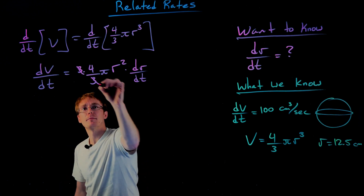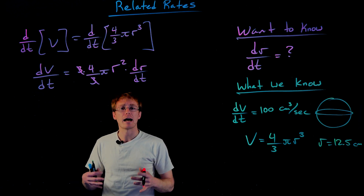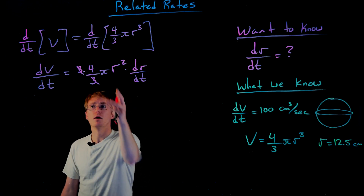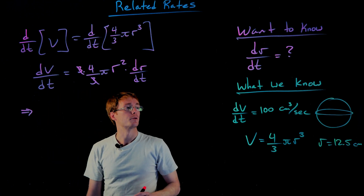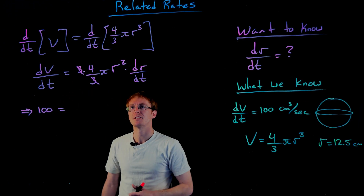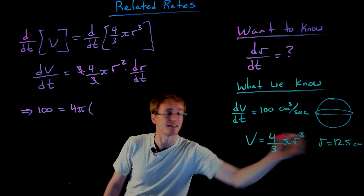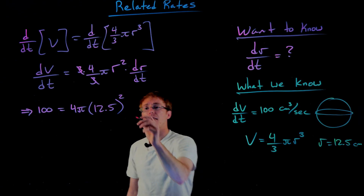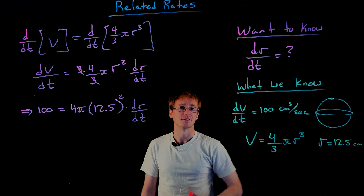We can simplify by canceling the common factor of 3 in the numerator and denominator on the right-hand side. That gives us our equation relating the rates: dV/dt = 4π r² · dr/dt. Now we plug in the information we know. dV/dt is 100 cubic centimeters per second, and that equals 4π times the radius squared — the radius is 12.5 centimeters — and we can't forget to square that value, times dr/dt, the rate we're looking for.